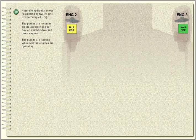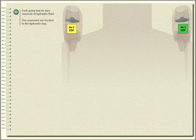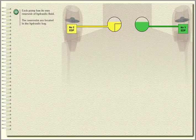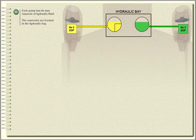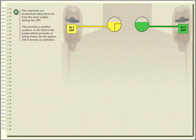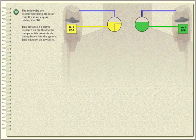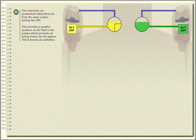The pumps are running whenever the engines are operating. Each pump has its own reservoir of hydraulic fluid. The reservoirs are pressurised using bleed air from the same engine driving the EDP. This provides a positive pressure on the fluid to the pumps, which prevents air being drawn into the system — this is known as cavitation.